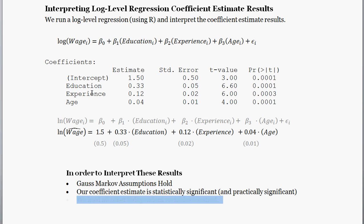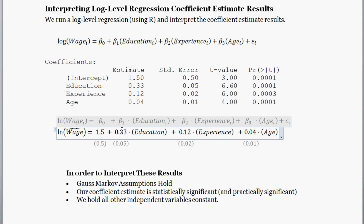And then lastly, we hold all the other variables constant when we're interpreting a single regression coefficient. So when we say interpret beta one here, we're assuming that the experience and age are all also held constant. So given those, holding those assumptions, let's interpret beta one.